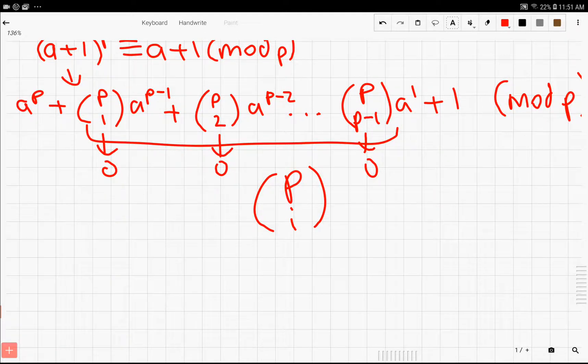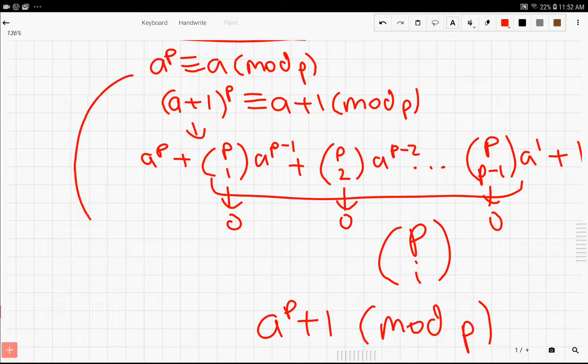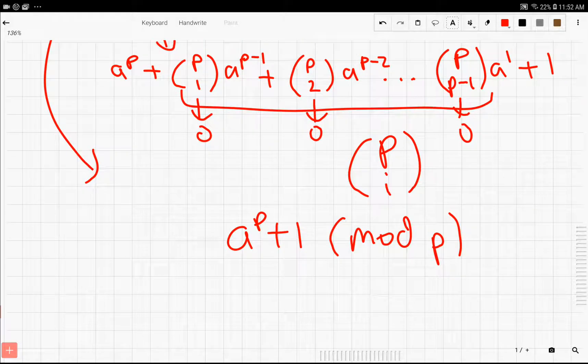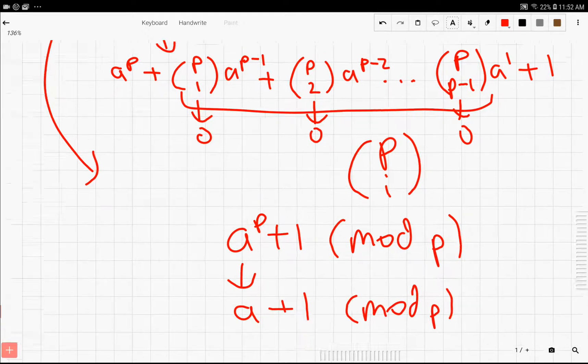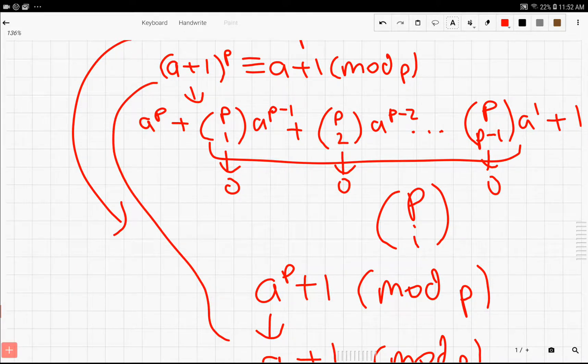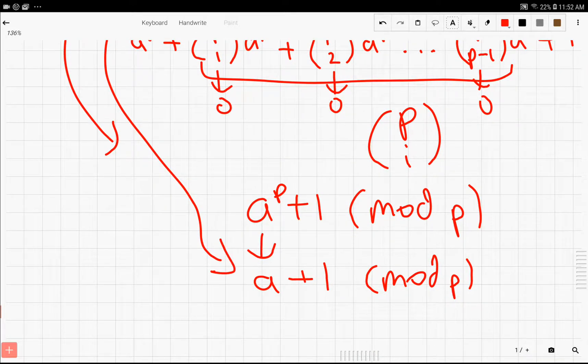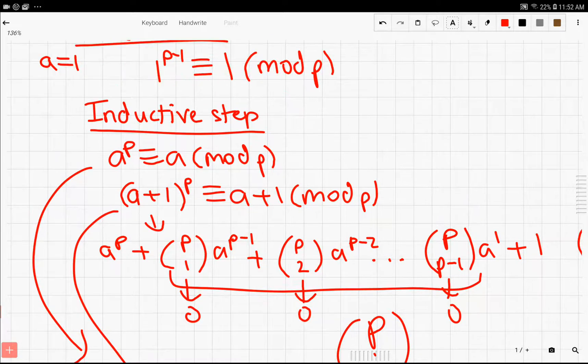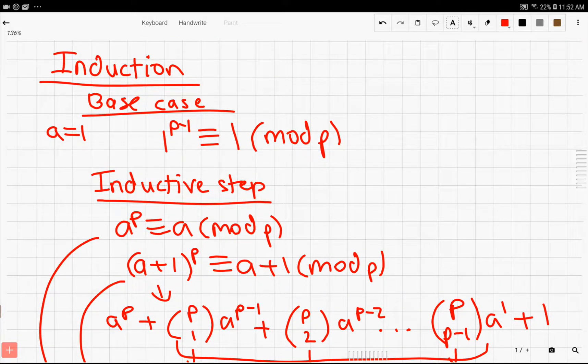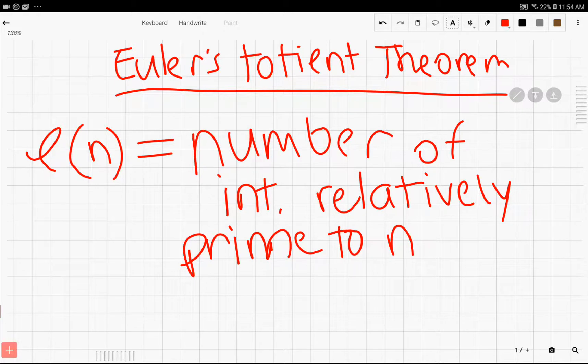Once we've done that, we have a^p + 1 mod p. However, we can simplify this even further because we were given that a^p is equivalent to a mod p. Therefore, the a^p becomes a, giving us a + 1. And we are done, because all we wanted to prove was that (a+1)^p is equivalent to (a+1) mod p. Therefore, by induction, we have proven Fermat's Little Theorem.